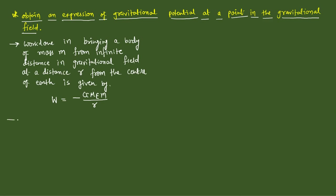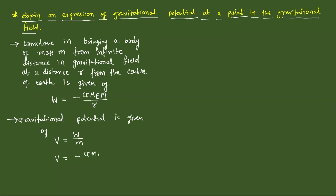This is the work done. Gravitational potential V is equals to W divided by m — work done per unit mass. So V = (-GMₑm/r) / m. Here m and m cancel, so V is equals to minus GMₑ divided by r. This is the equation of gravitational potential.